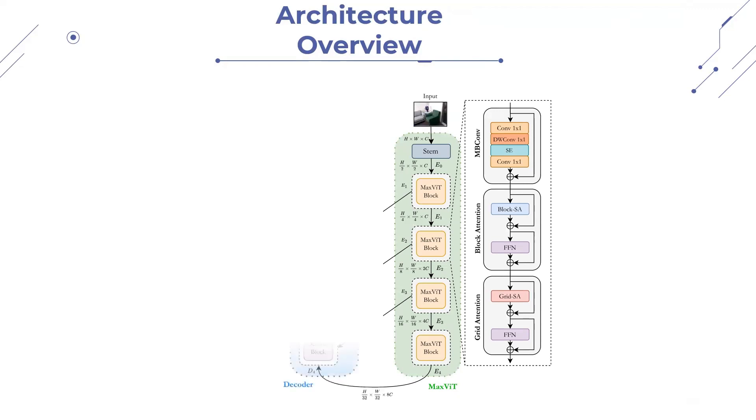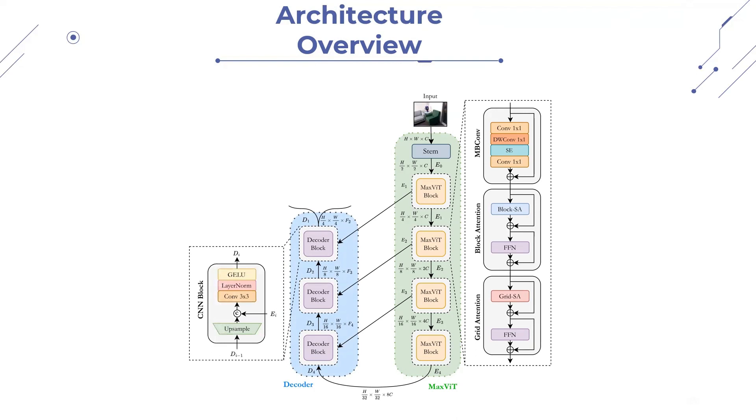Then these encoded features are processed with a convolutional decoder comprising a CNN, upsampling and GELU, and a layer normalization layer. Finally, the decoded features are processed with the proposed DSS module, which produces the final depth and semantics, ensuring proper symbiosis.